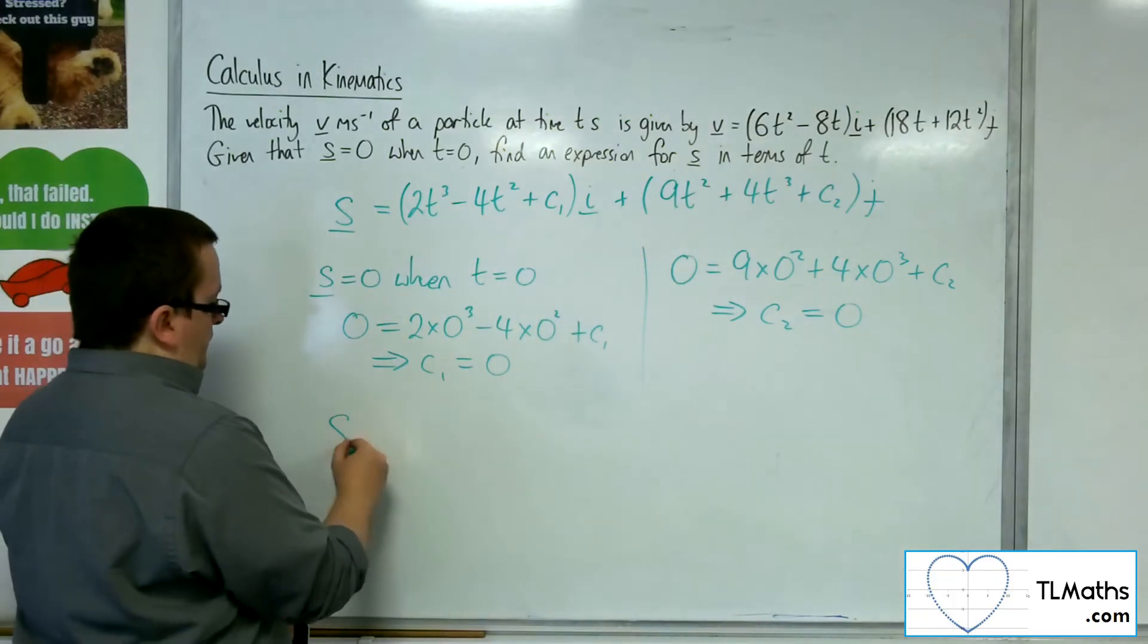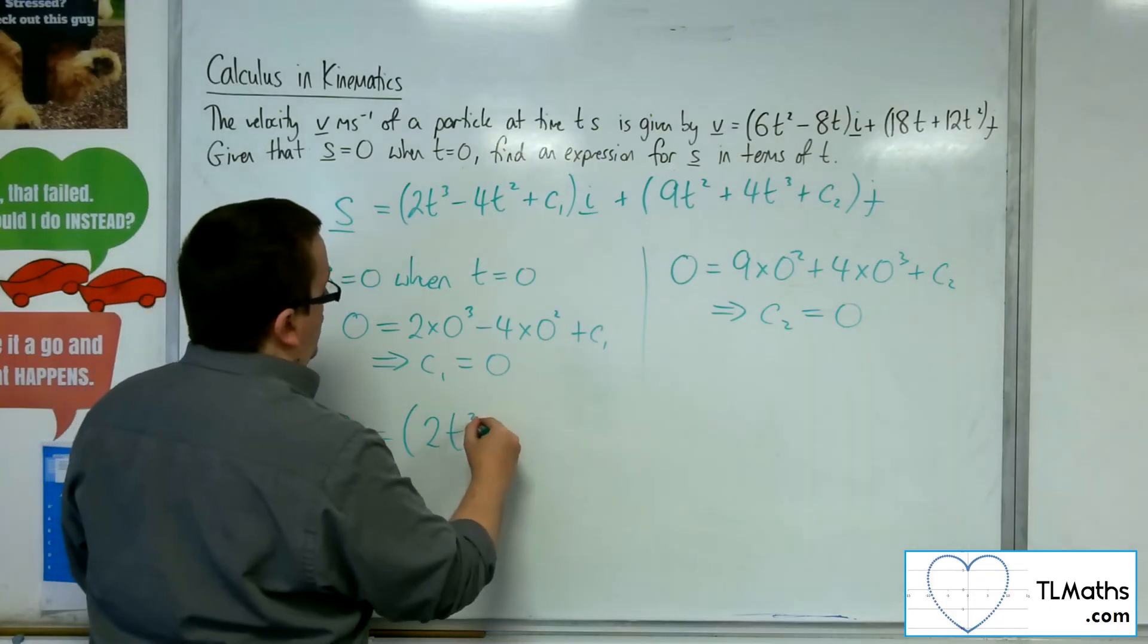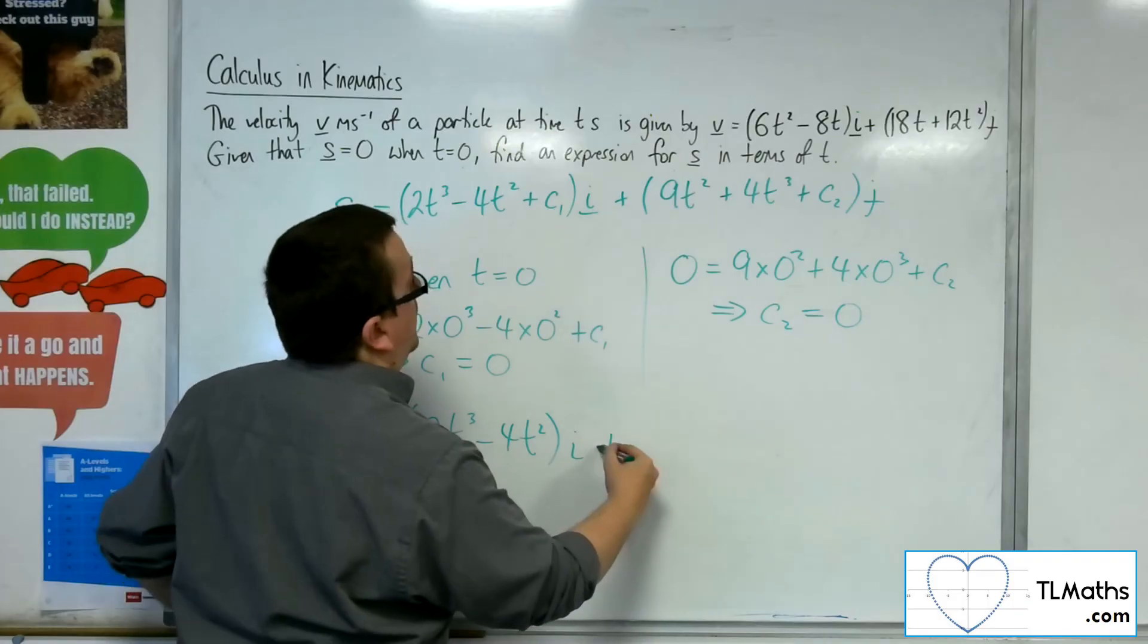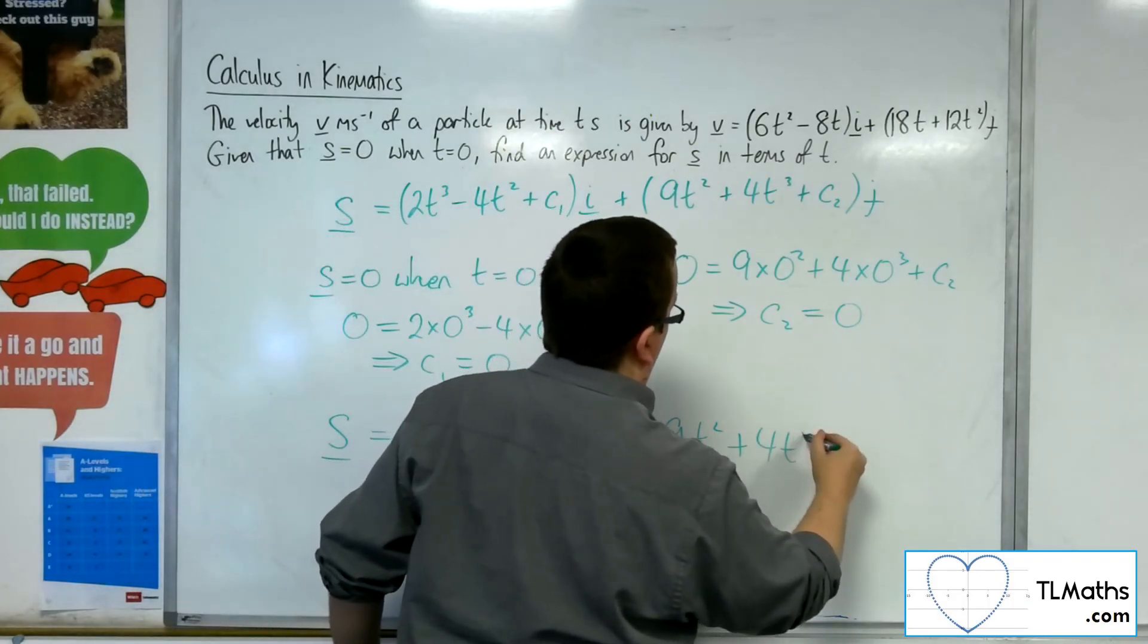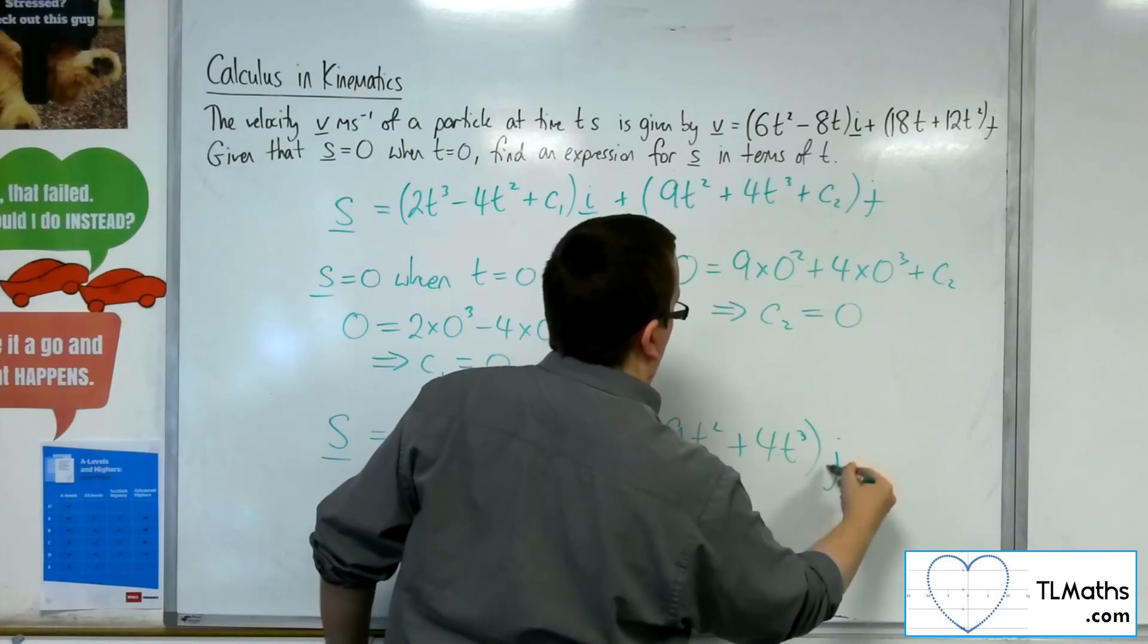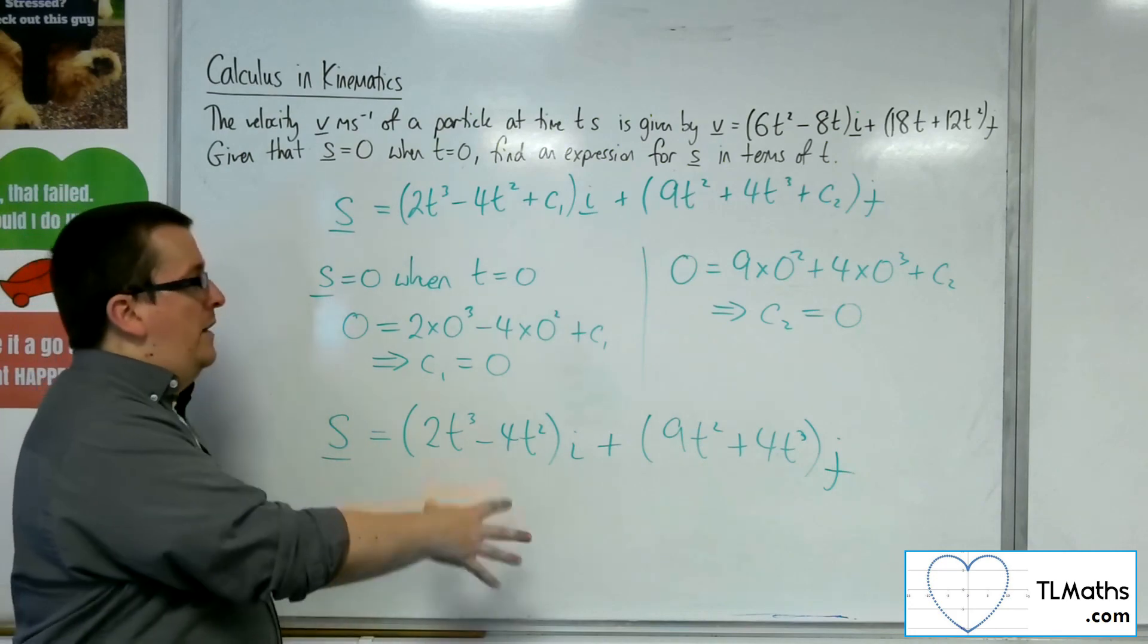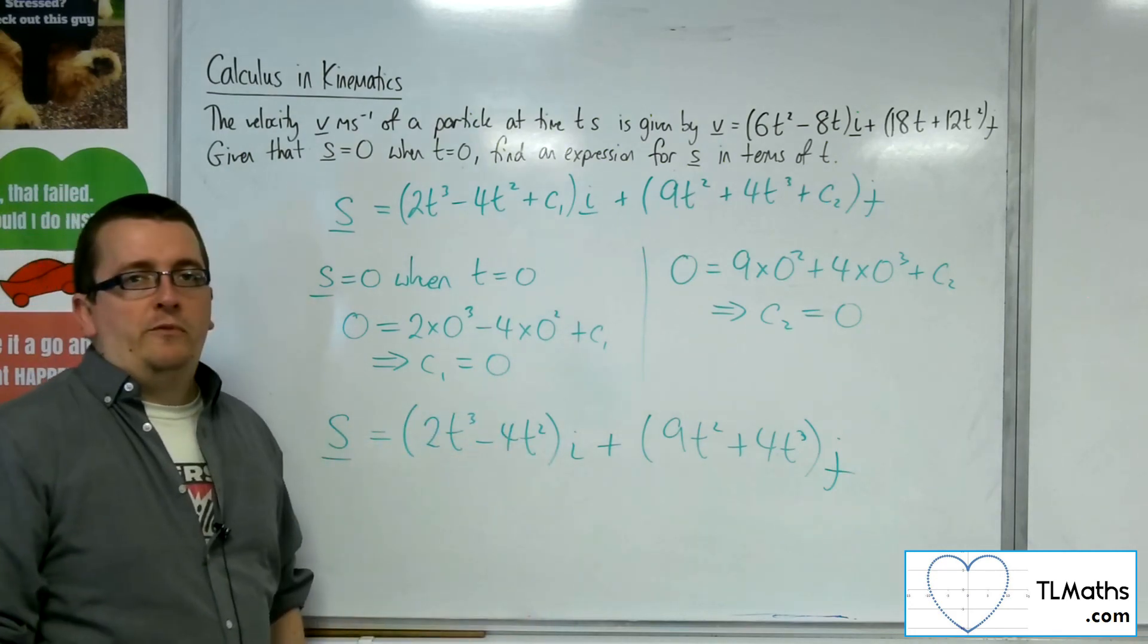And so the displacement will be 2t cubed minus 4t squared i, plus 9t squared plus 4t cubed j. So that's how I can work out and use the initial conditions to finish off and find the displacement vector.